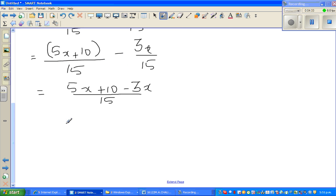Now I am going to group the like terms. It is always good to do more number of steps in algebra rather than less number of steps because it is safe. You can simplify this too. You got 5x take away 3x, which is 2x plus 10 over 15.